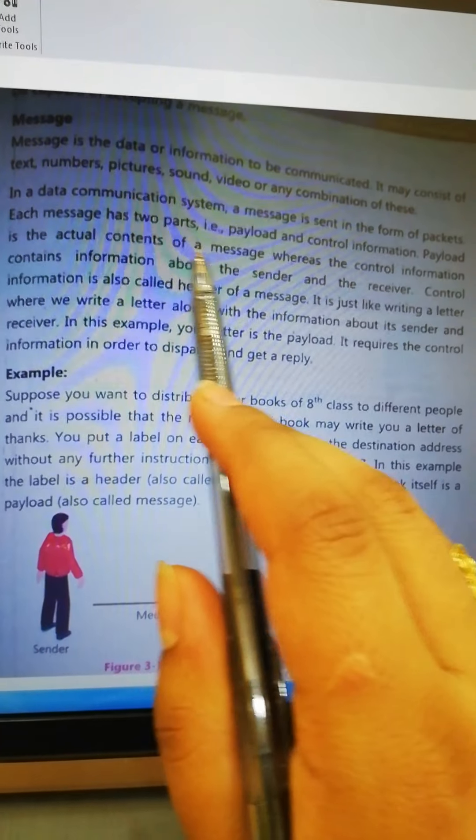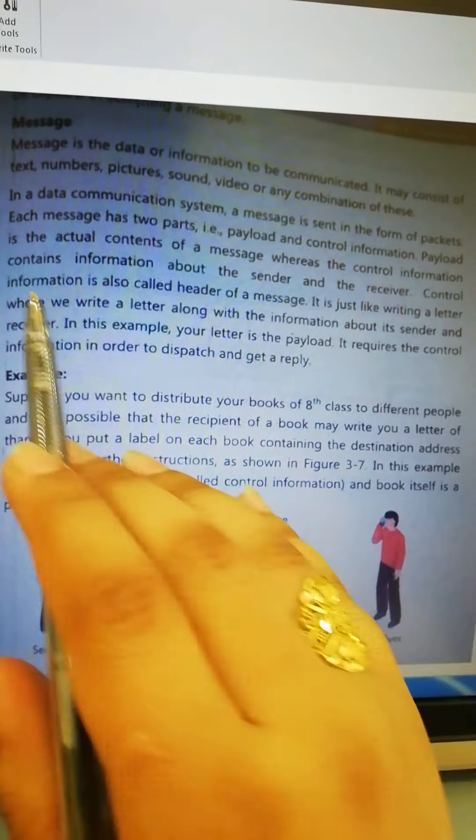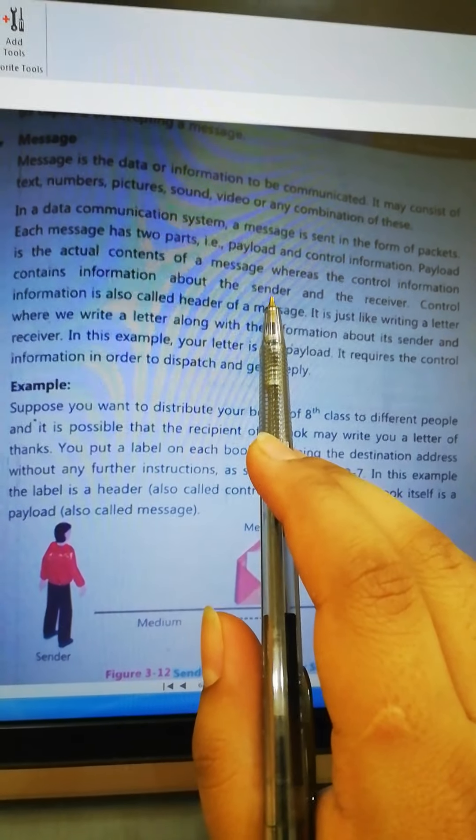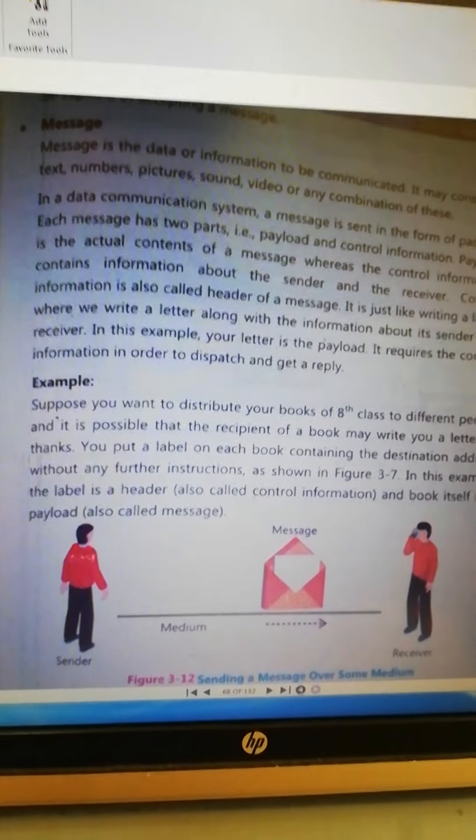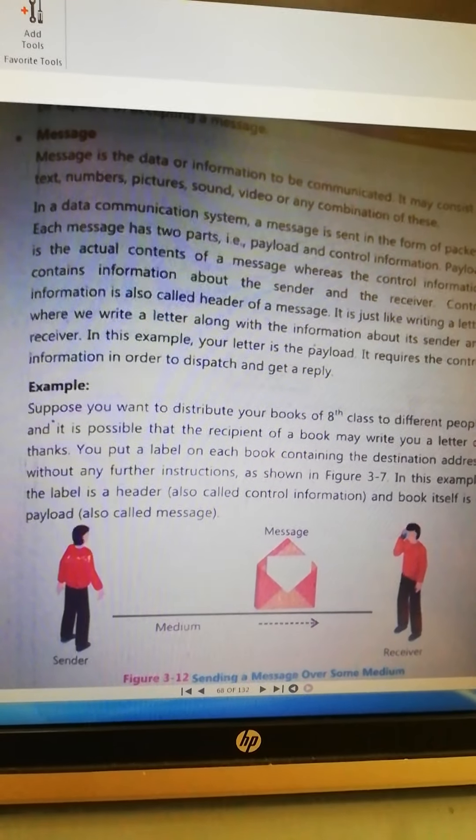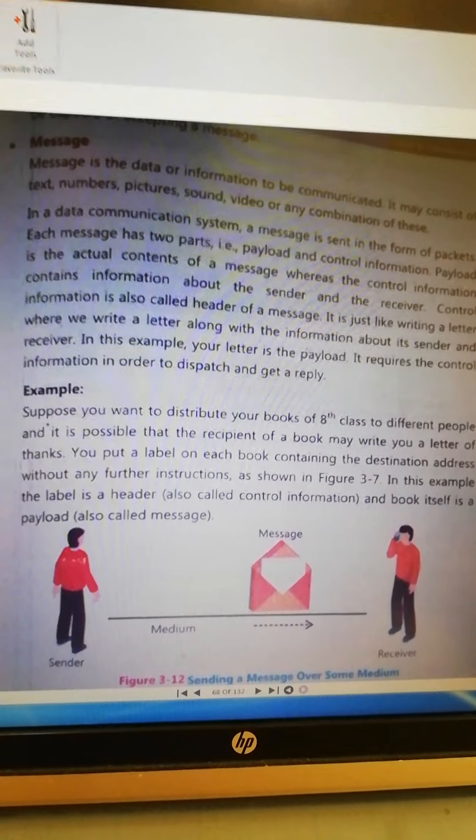Payload is the actual content of the message, whereas the control information contains information about the sender and the receiver. In the payload, we know what the message is, what is the actual message, what are the features of the message. We call it payload.